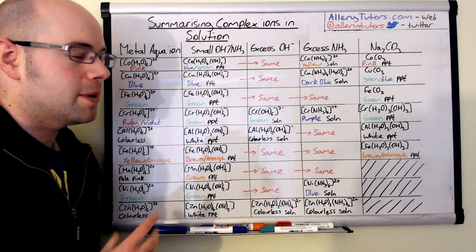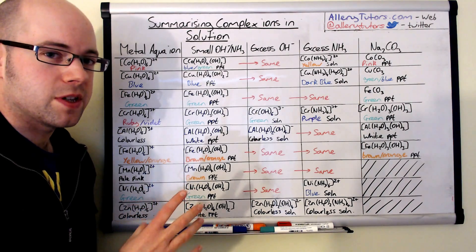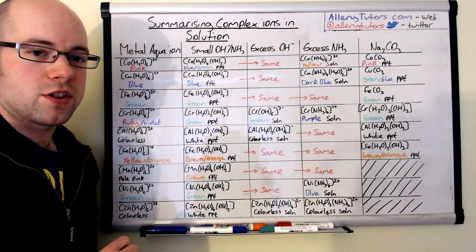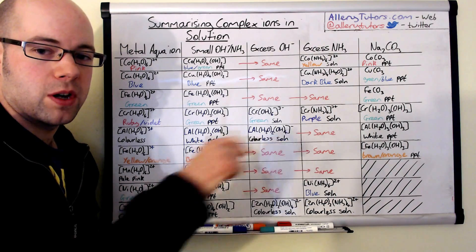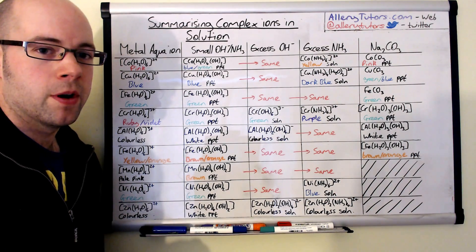But again if you're not sure why carbonate is behaving this way and about the acidity of these different transition metal complexes, if you just click on the link below and have a look at the video for that one as well that tells you a little bit more.